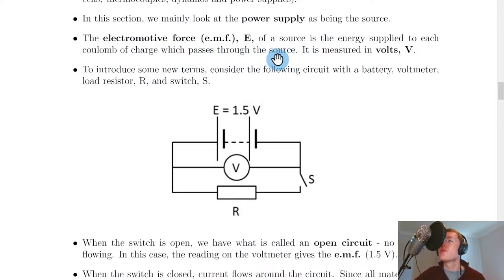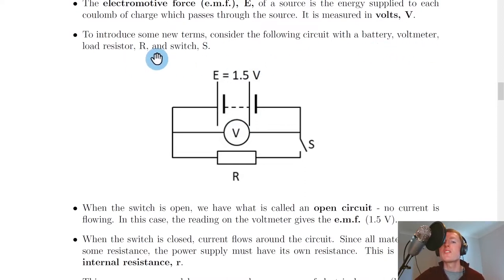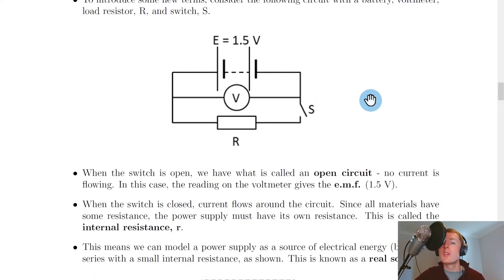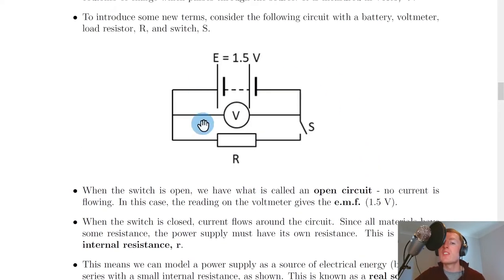You should recognize this definition because it is identical to the definition for potential difference or voltage from National 5. That's because electromotive force is also a voltage. To introduce some new terms, consider a circuit with a battery, voltmeter, load resistor R, and switch S. When the switch is open, we have what is called an open circuit.